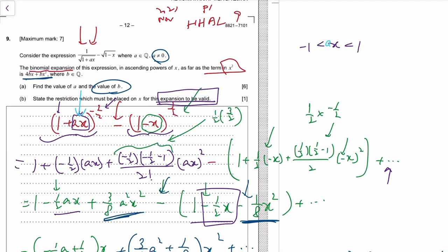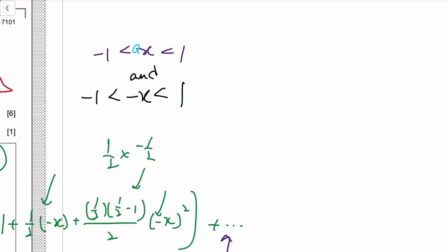So we need ax to be between negative 1 to 1, while for the second expansion our x was negative x, so we also need negative x to be between negative 1 and 1.